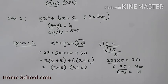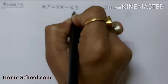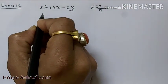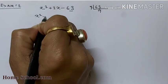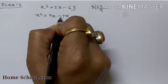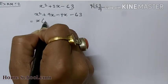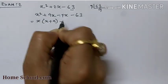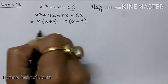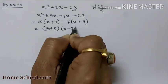Example 2: x² + 2x − 63. We need to find two numbers. The LCM factors of 63 give us 7 and 9. We write x² + 9x − 7x − 63. Taking x common gives x(x + 9). Taking −7 common gives −7(x + 9). So the answer is (x + 9)(x − 7).